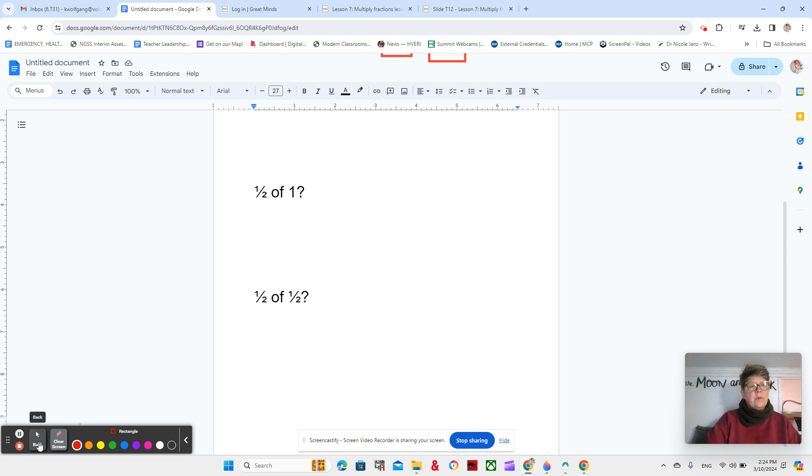Hopefully, you're thinking, well, 1 half of 1 is equal to 1 half, because 1 half plus 1 half equals 1 whole, right? Okay. What equation shows us that? 1 half times 1 equals 1 half. Okay, that makes sense, right? How do you know that 1 half of 1 is 1 half?